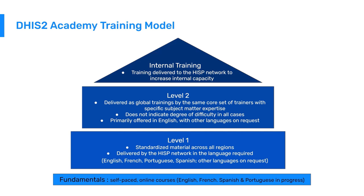Next, we have our Level 1 Academies. Courses in this classification share standardized materials across all regions and are delivered by HISP groups during regional trainings, localized and delivered in multiple languages. Our Level 2 Academies are delivered as global trainings by the same core set of trainers with specific subject matter expertise. This classification does not necessarily indicate a degree of difficulty, as several courses do not require any prerequisite DHIS2 skill. Lastly, we have internal training performed within the HISP network, which varies depending on the needs of the HISP group at any given time.